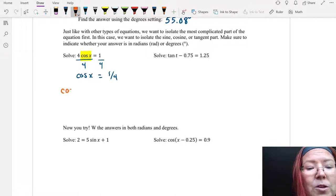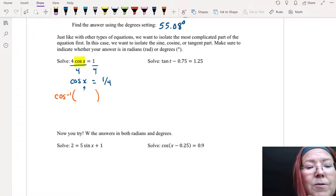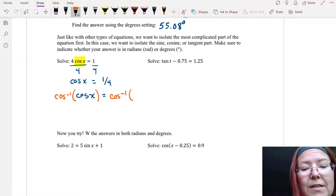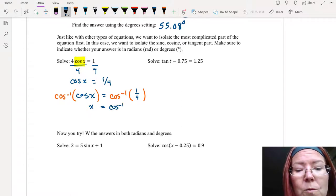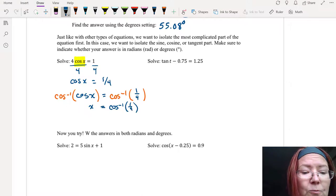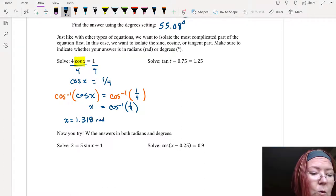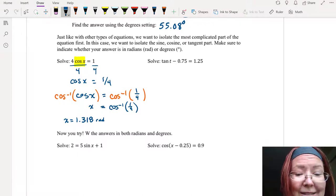So we have cosine x equals 1 fourth. Now we'll take an inverse cosine on the left making inverse cosine of 1 fourth. Simplifying on the left we just have x. On the right we have inverse cosine of 1 fourth.